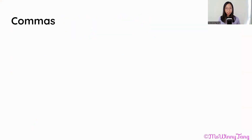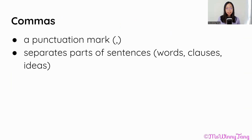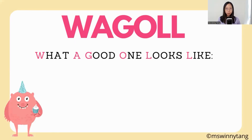Now we're going to have a look at commas. A comma is a punctuation mark just like a full stop. It separates the parts of sentences — the words, the clauses, the ideas in a sentence. Here are some examples of what a good one looks like.